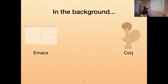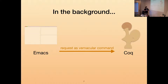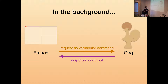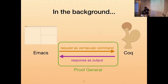Here is how that stepping through works in the background. Emacs can send to Coq a request as a vernacular command, and then Coq would send a response as an output. All of this interaction happens in Proof General — that's the bridge between Emacs and Coq.